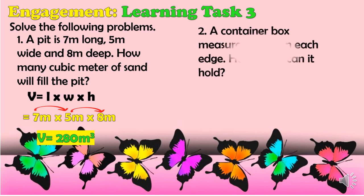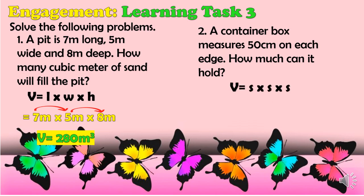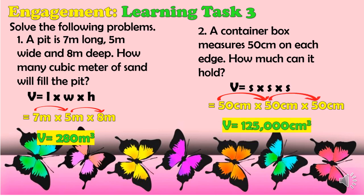Problem 2: A container box measures 50 centimeters on each edge. How much can it hold? Since all edges are equal, this is a cube. Using V = S × S × S, substituting 50 cm for each side: 50 × 50 × 50 gives a volume of 125,000 cubic centimeters.